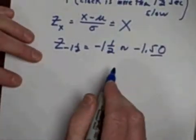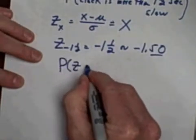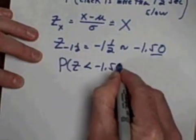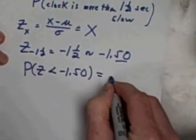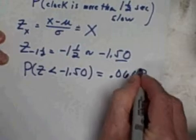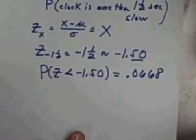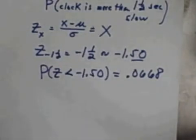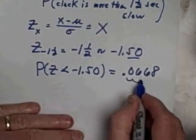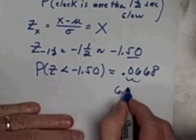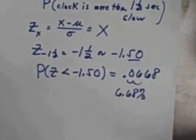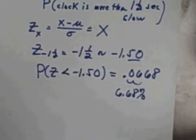What that means is: the probability that my z-score is less than negative 1.50 is equal to 0.0668. That's the probability that we randomly pick a clock and it's more than one and a half seconds slow. Moving the decimal point two places, that's approximately 6.68% — about 6.68% of all clocks made in this factory will be more than one and a half seconds slow.